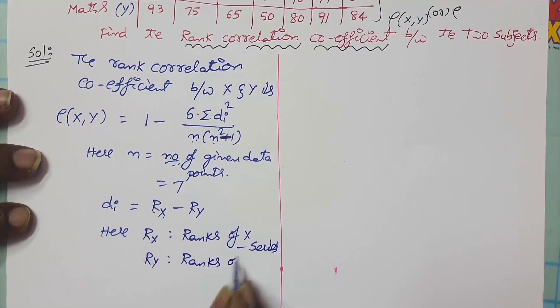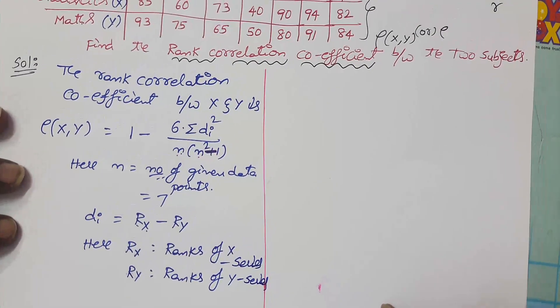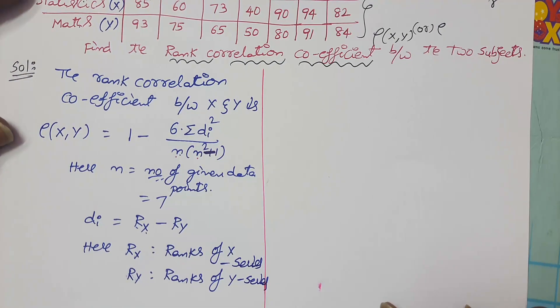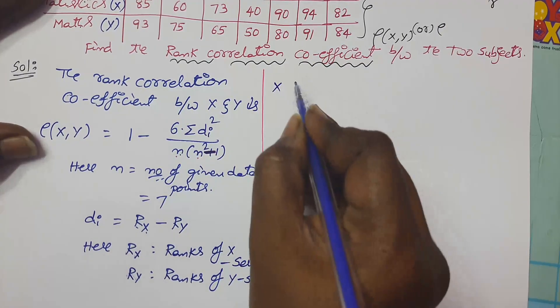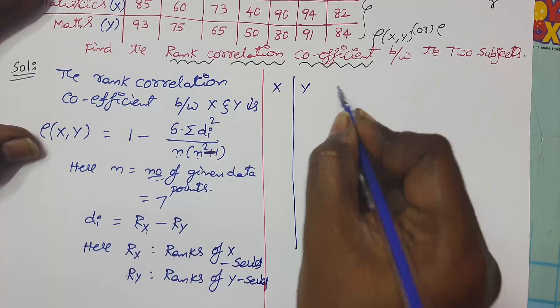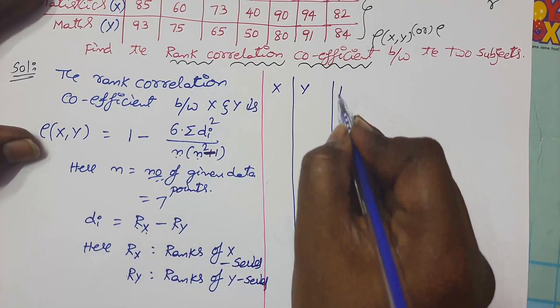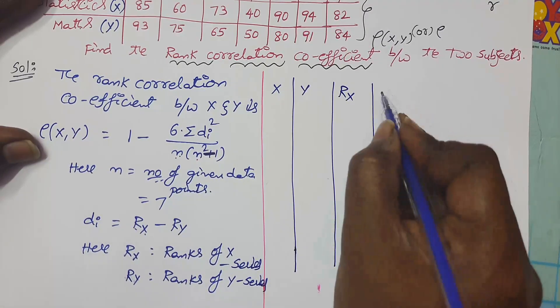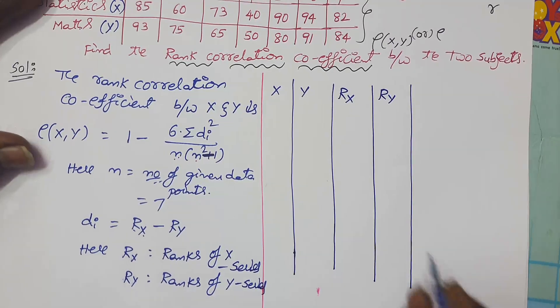In the statement, we can take the marks of statistics as x and marks of mathematics as y. So Ry equals ranks of y series, or y values as usual. First of all, we have to find out the ranks of x series and ranks of y series. For that purpose, construct a table here. First take x, y, Rx, Ry.